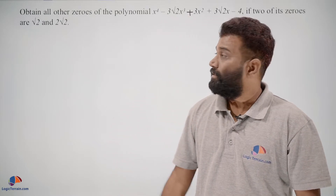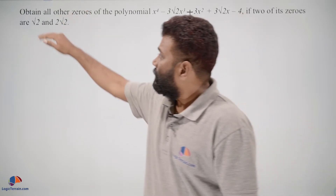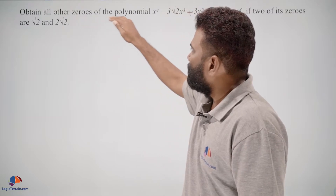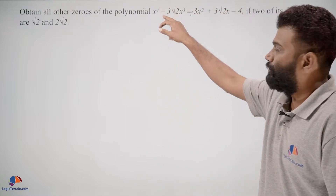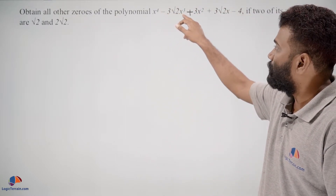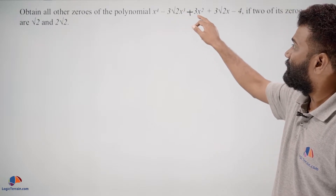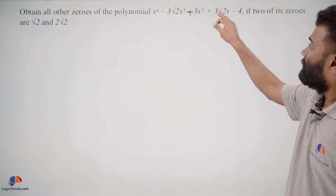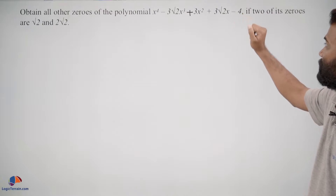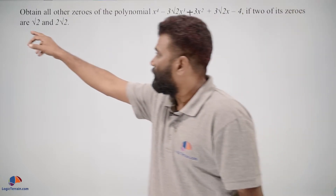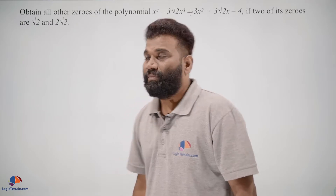Hello students, here is our question: obtain all other zeros of the polynomial x to the power of 4 minus 3 square root 2 x cubed plus 3 x squared plus 3 square root 2 x minus 4, if 2 of its zeros are square root 2 and 2 square root 2.